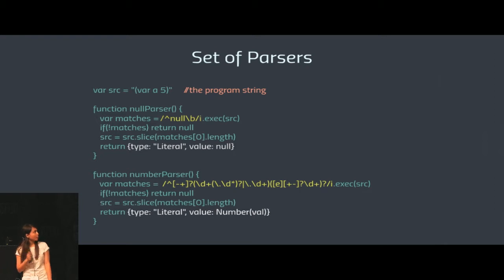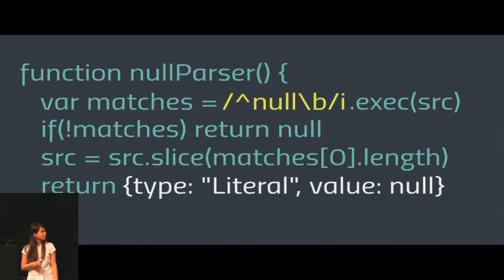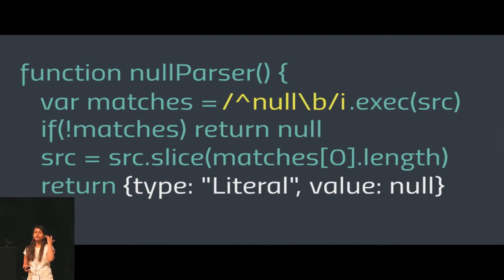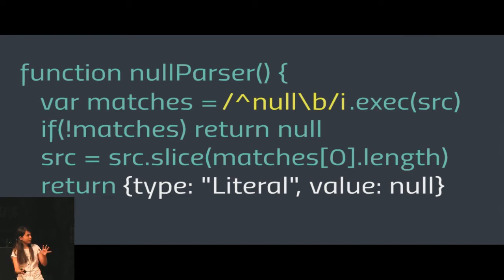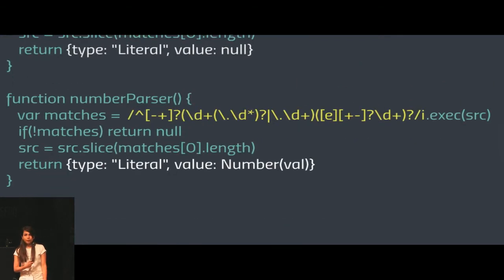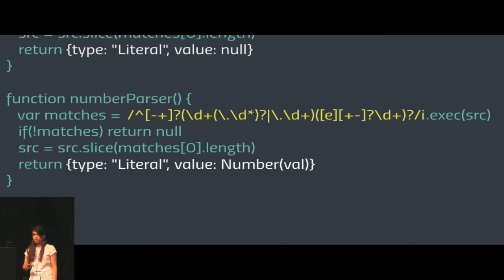Here we have a Lispy Script program with variable A equal to 5, which is the source string, and this is a null parser. We try to match the string against a regular expression. If it does not match, it returns null and tries another parser. If it does match, we slice it out of the program string and return the representation with type 'literal' and value 'null'. For a number parser, it would use another regular expression and return type 'literal' with the numeric value of the match.